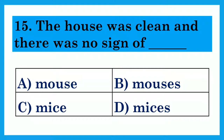The house was clean and there was no sign of dash. Option A: Mouse. Option B: Mouses. Option C: Mice. Option D: Mices. The answer is Option C: Mice — The house was clean and there was no sign of mice.